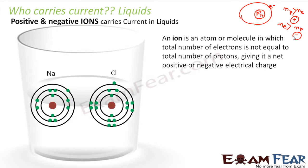Let us take the example of NaCl — sodium chloride, that is your common salt. In sodium, you have only one electron in its outermost shell. In case of chlorine, you have seven electrons in the outermost shell. Now chlorine will be happy if it gets one more electron, because if you have eight electrons in the outermost shell, the shell is stable. The outermost shell is stable if you have eight electrons or zero electrons. So if chlorine gets one more electron, chlorine is stable. If sodium loses one electron, sodium is also stable.